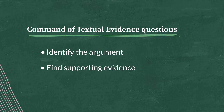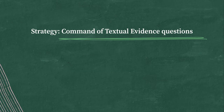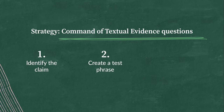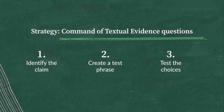Follow me to the strategy corner. The question will introduce a central claim or argument, and it'll be stated very clearly, so you won't have to go digging for it. But that's your first job: identify the claim. Once you do that, create a test phrase that restates the claim in your own words. Doing this will give you control of the idea and allow you to see it restated differently. Once you've got your own words version of the claim, test it against the choices. Whichever choice matches your test phrase will be the answer.